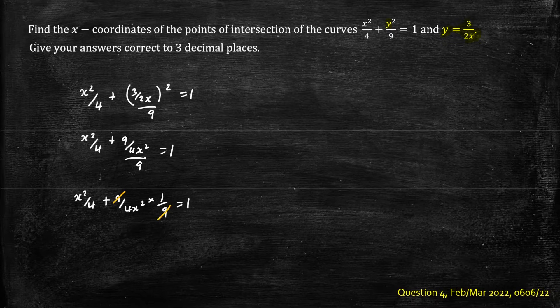Here then our nines will cancel. So we'll have x squared on 4 plus 1 on 4 x squared equals 1.